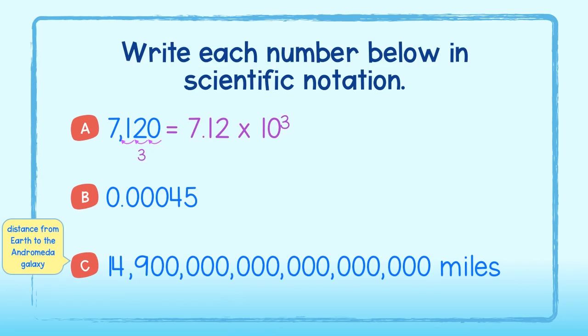For part b, we must move the decimal 1, 2, 3, 4 times. And since this number is getting larger, our power of 10 must be getting smaller. We write this as 4.5 times 10 to the negative fourth.